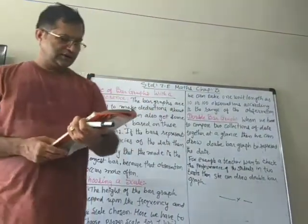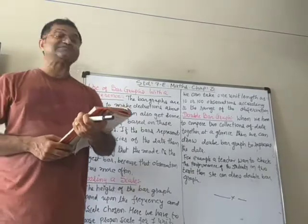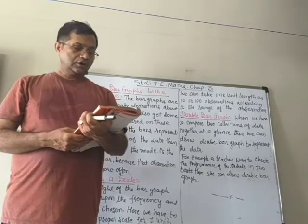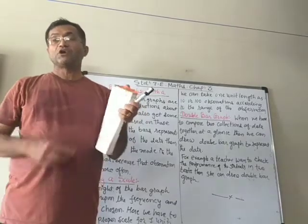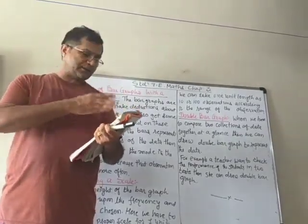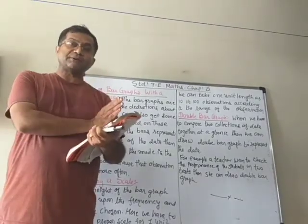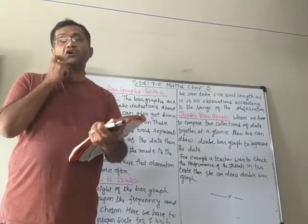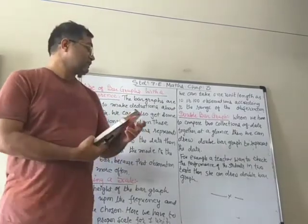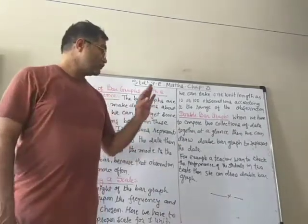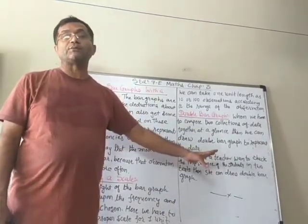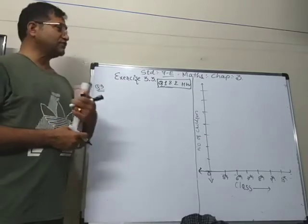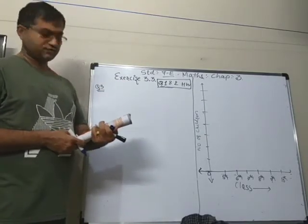You can see here a double bar graph showing the hours of sunshine in two cities — Muscat and Abuddin — during different months from January to December. The two sets of data can be displayed together, and the double bar graph is very useful for this type of information. Now we will start exercise number 3.3, question one and question two.